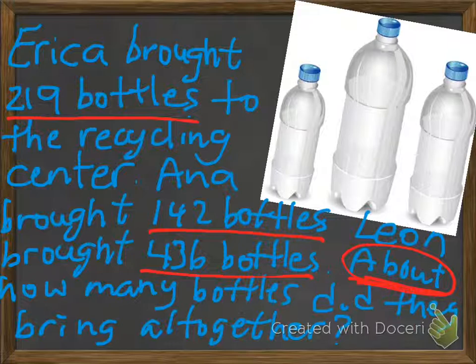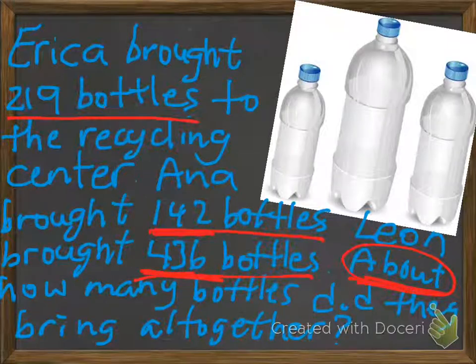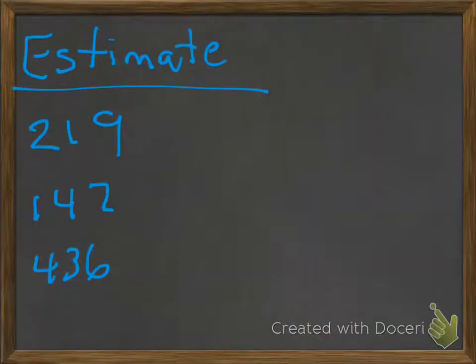So let's estimate first. We have our numbers here. We're going to estimate probably to the nearest hundreds, so we're going to look at the hundreds place. And the 1 signifies to us we're going to round down. So really, this goes to 200.